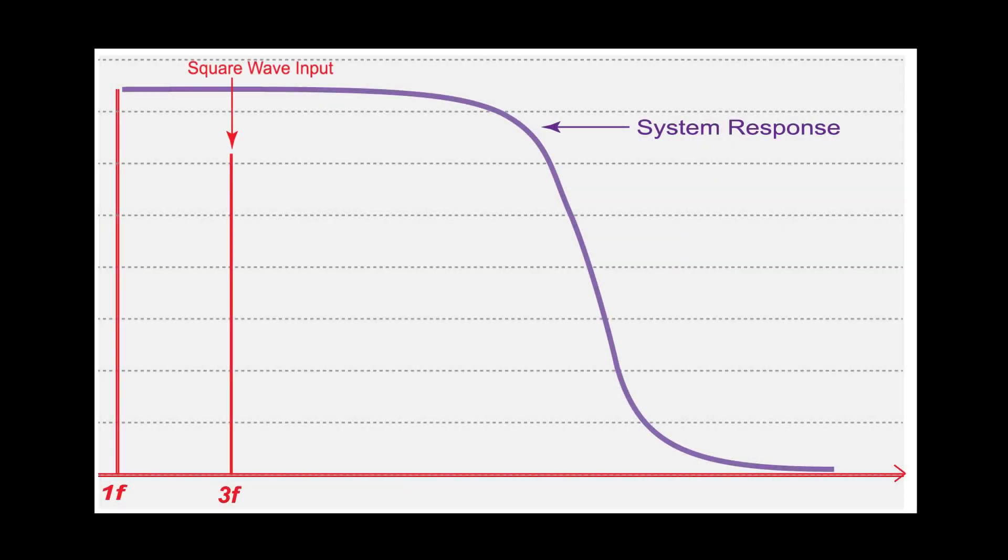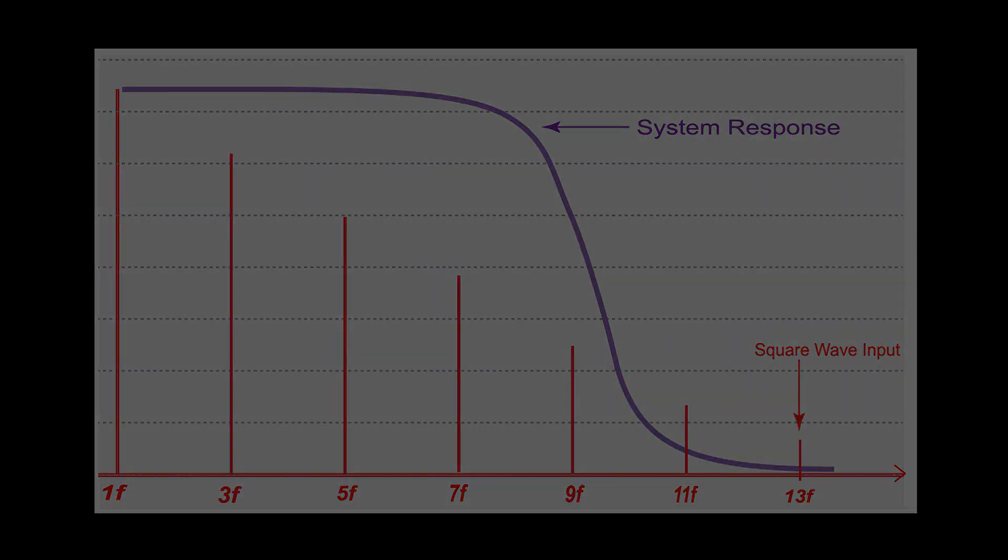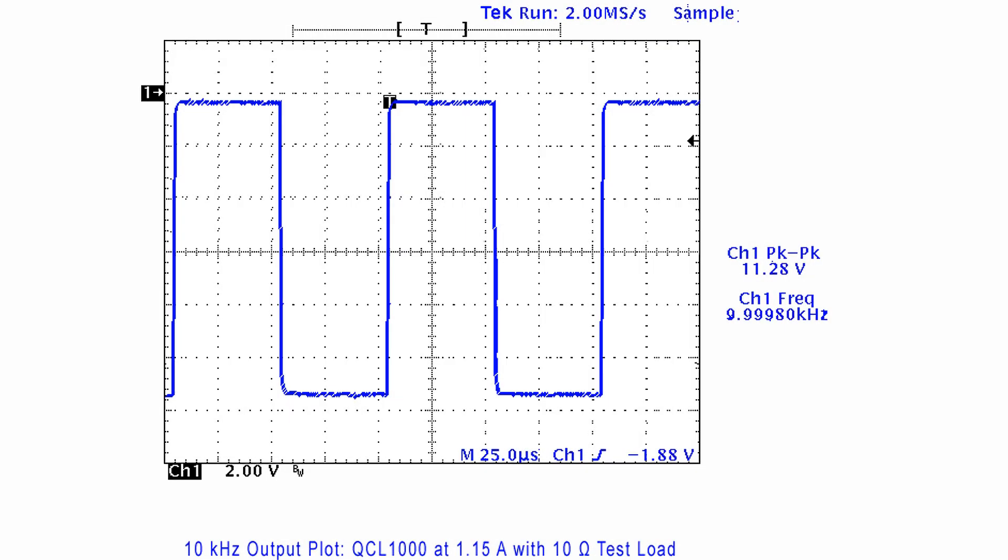A square wave in the frequency domain looks like a sum of odd frequencies. Here we show a well-defined square wave, well within the system's bandwidth at approximately 10 kHz.